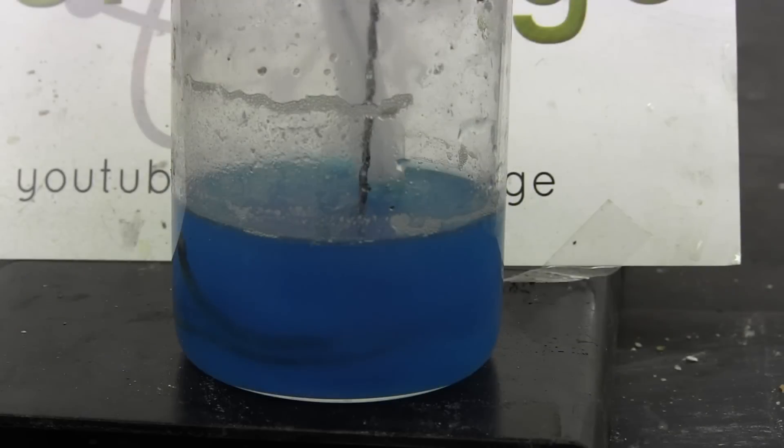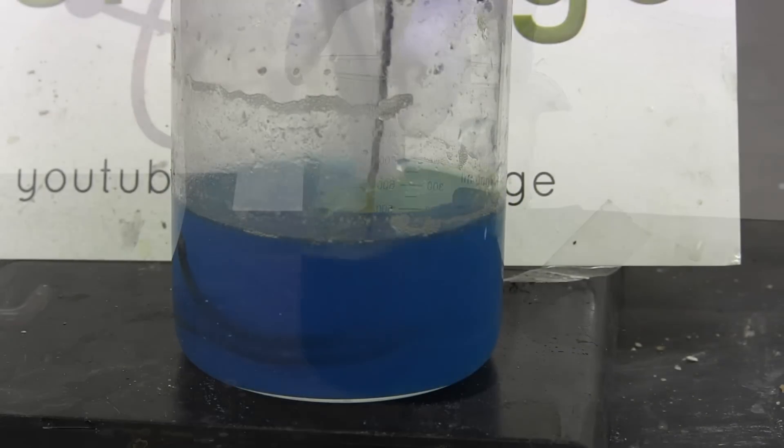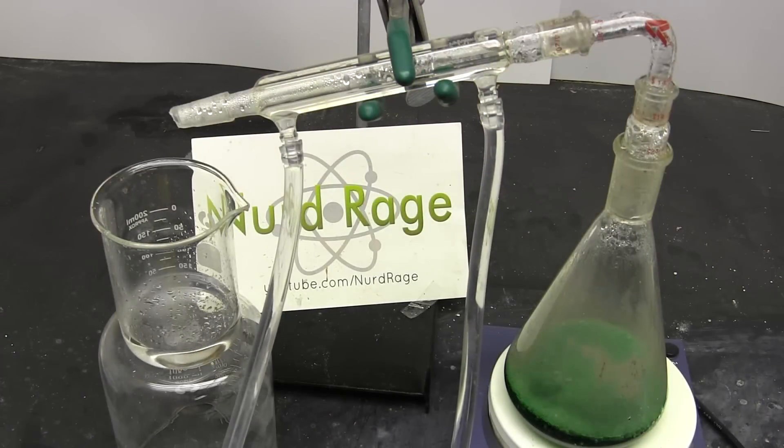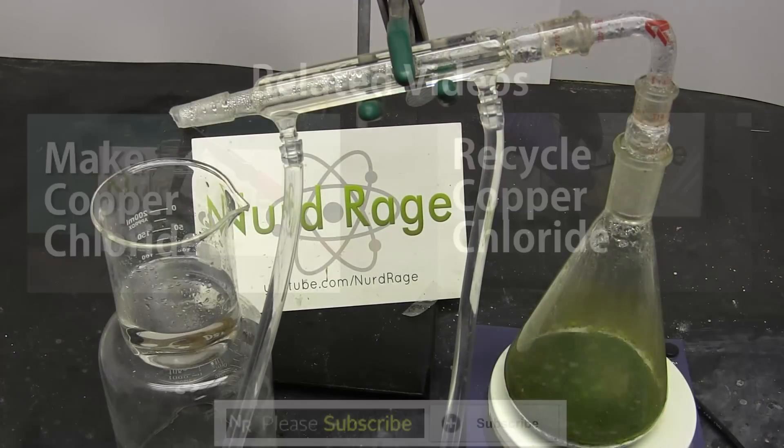And there you have it. We have now recovered the copper from the spent ferric chloride PCB etchant and regenerated the etchant for reuse. And we've done so without producing any additional chemical waste. Thanks for watching.